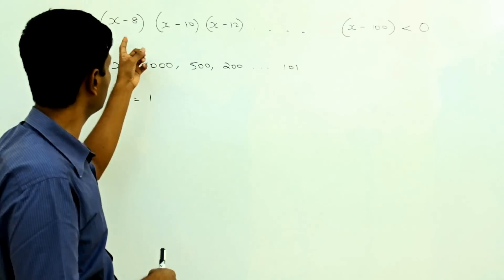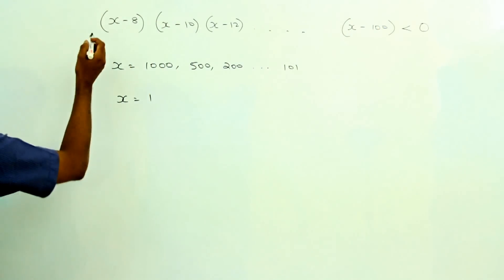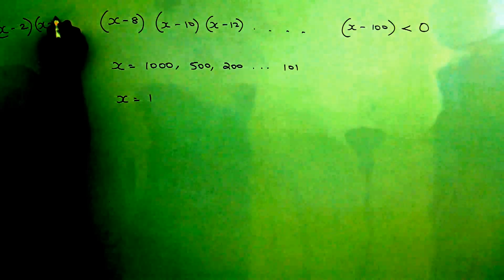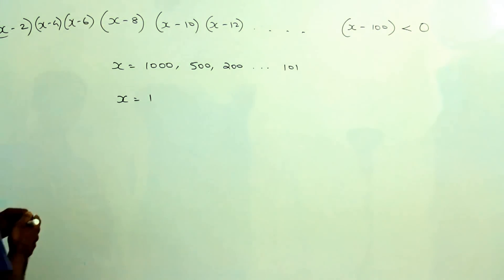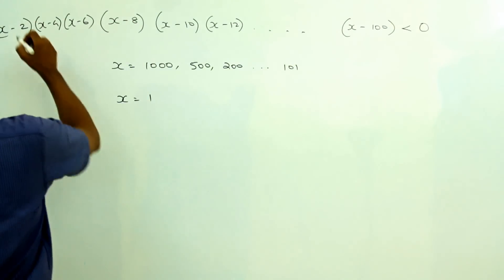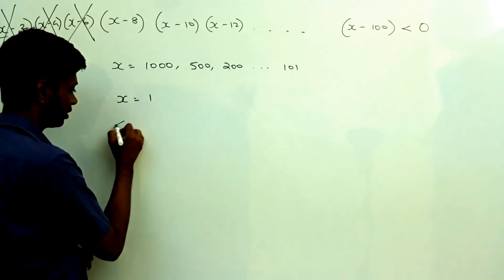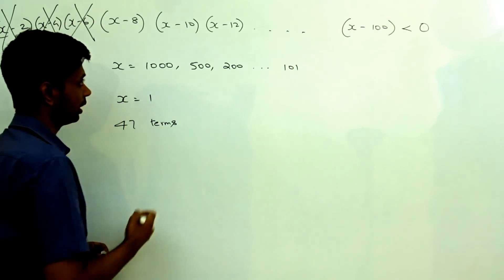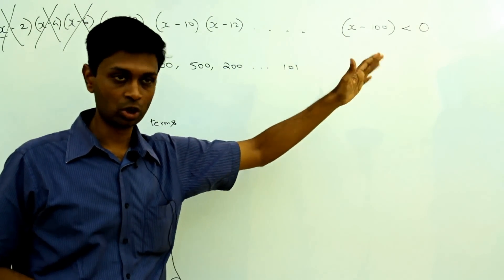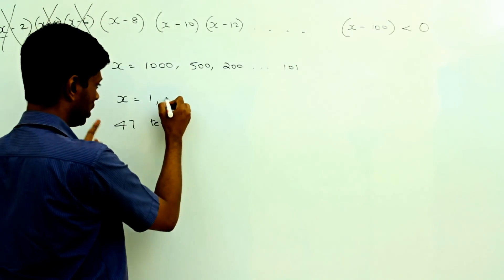So the next step is to find how many terms there are — even or odd? We have from x minus 8 till x minus 100. Let me assume we also have x minus 2, x minus 4, and x minus 6. Then x minus 2, x minus 4, all the way to x minus 100 would be 50 terms. My actual expression does not have those 3 terms, so this expression has 47 terms. Thus, multiplying 47 negative numbers, the product will be negative. So when x equals 1, the product is negative — it works.